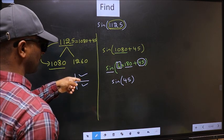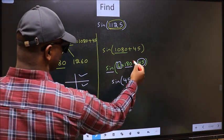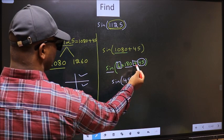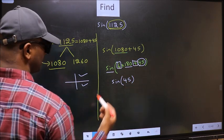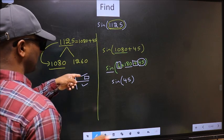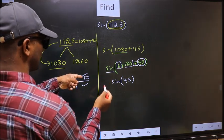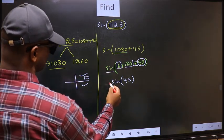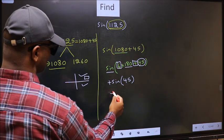So now to select the quadrant, we should look at this symbol. Here we have plus, that means the angle lies in the first quadrant. And in the first quadrant, sin is positive, so we should put plus.